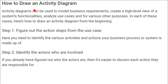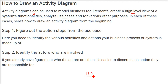How to proceed with an activity diagram: activity diagrams can be used to model business requirements for your software or application, creating a high-level view of system functionality. First, figure out the action steps from the use case — identify the different activities and actions the business process or system is made up of. Second, identify the actors who are involved, as it is easier to discern each action they are responsible for.